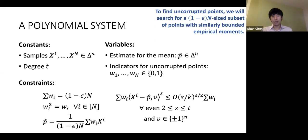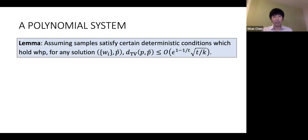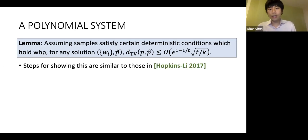What's the main technical fact you need to show? You need to show that if I have some satisfying assignment to the polynomial system, then it should yield a p-hat which satisfies the desired TV bound. It turns out showing this technical fact requires ingredients very similar to those needed for robust mean estimation for sub-gaussians in Hopkins-Lee.